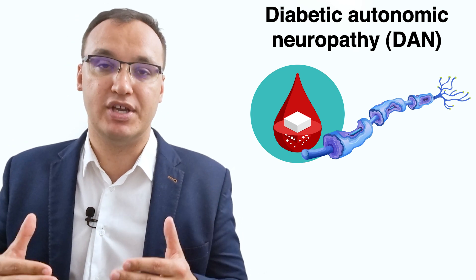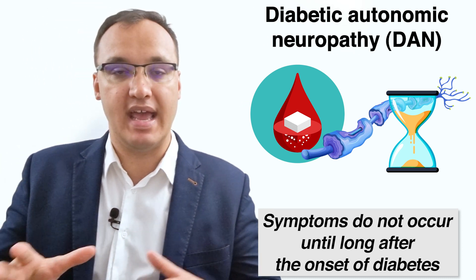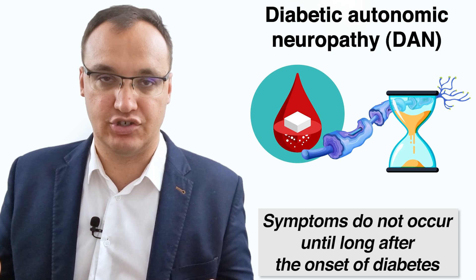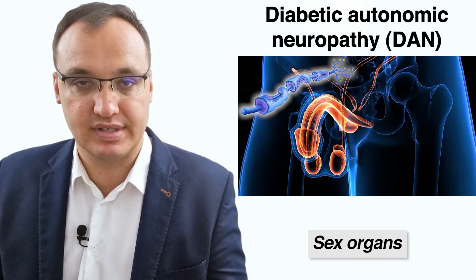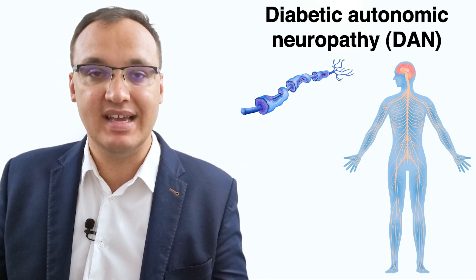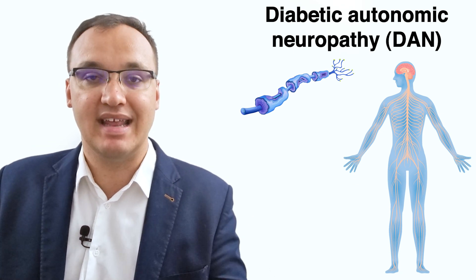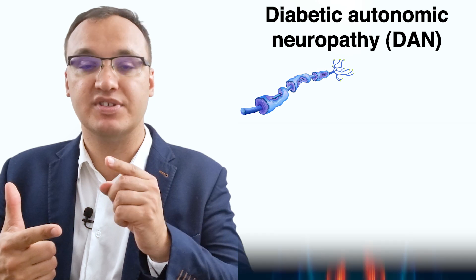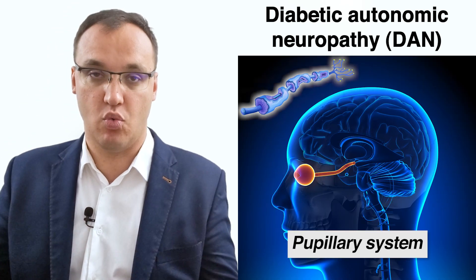The autonomic nerves are mainly affected in the later stages of diabetes. These work unconsciously and regulate many body functions, such as controlling the bladder, the intestinal tract, and the sex organs. The effects of diabetic autonomic neuropathy therefore involve all these symptoms, creating urologic symptoms, gastrointestinal symptoms, cardiovascular system symptoms, pupillary systems, and so on.